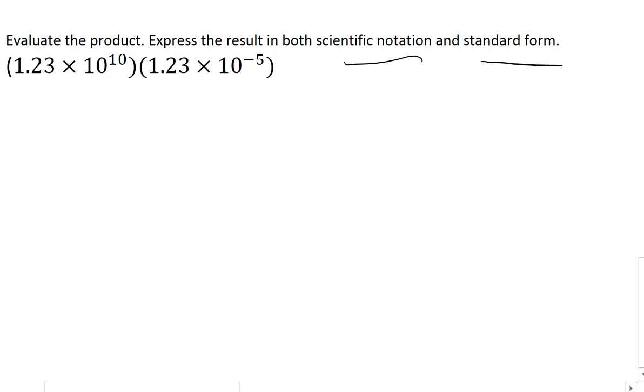then this 1.23, both of them, I'm going to multiply them. I'm going to write this as 1.23 times 1.23 there.